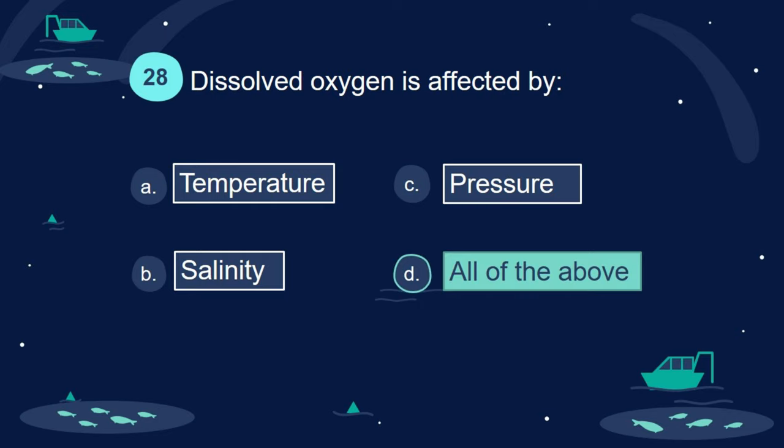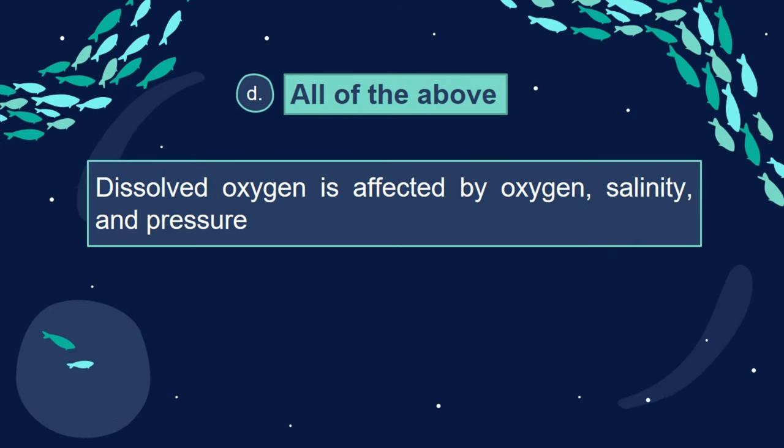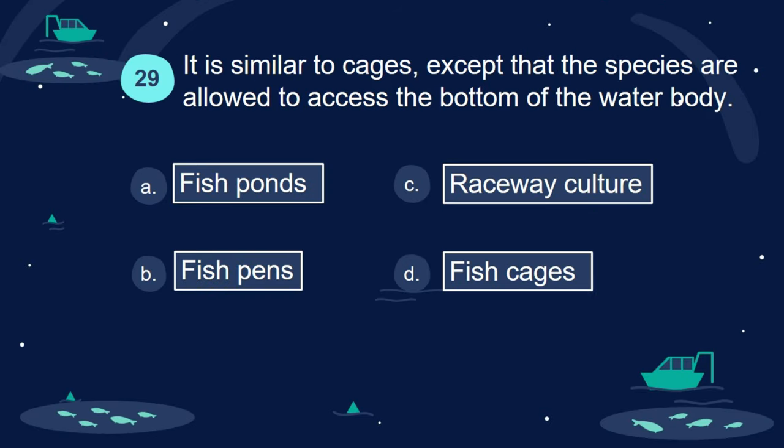Answer: D. All of the above. Dissolved oxygen is affected by temperature, salinity, and pressure.